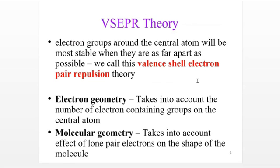We can first understand VSEPR theory — the valence shell electron pair repulsion theory. The key part is electron pair repulsion, which happens in the valence shell. In molecules such as water, where we have a lone pair of electrons and two bonds, the lone pair repels the bonds. That is why water takes a bent shape — it's not going to be linear. There's an angle at which the OH bonds are bent because of the repulsion from the electron pairs.